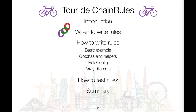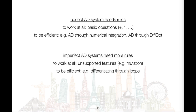You might be thinking: why do I need rules at all? Isn't the point of autodiff that I don't have to work out all these gradients by hand? It turns out that even a perfect AD system needs rules — first, to work at all, meaning it needs rules for basic operations that are then combined in more complicated functions, and second, to be efficient. For example, autodiff through numerical integration would take a very long time, while applying mathematical insight from the fundamental theorem of calculus results in a very elegant and efficient rule.